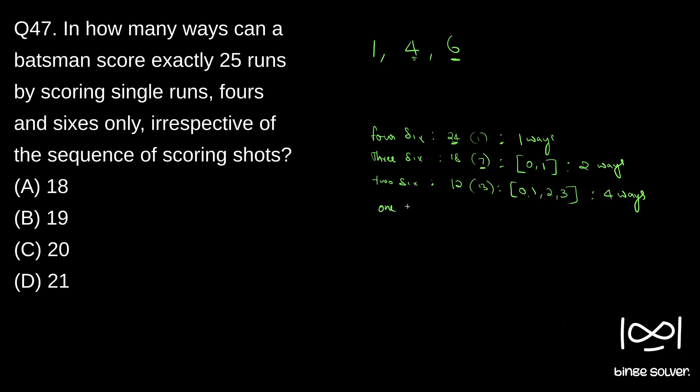Now 1 six. 1 six means he scored 6 runs. Rest is 19. 19 plus 6 is 25. So he has to score 19 runs. So he can either score 0 fours, 1 four, 2 fours, 3 fours, 4 fours, 16. And 5 fours means 5×4 is 20, which is greater than 19. So this is the only possible. So number of ways is 1, 2, 3, 4, 5. So 5 ways.